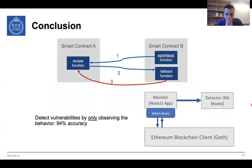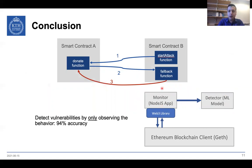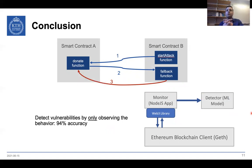In conclusion, we could detect vulnerabilities only by observing the behavior of smart contracts, achieving 94% accuracy with our random forest model. We presented the DYNAMIT framework, which consists of the monitor and the detector. The detector model used random forest, which had the highest accuracy with the collected data. Thank you for your attention.